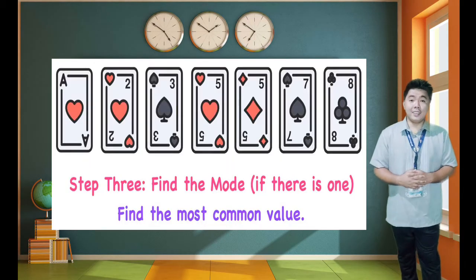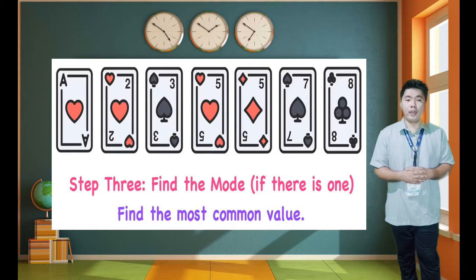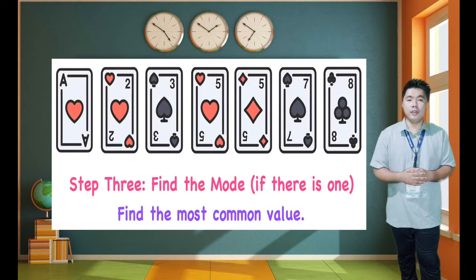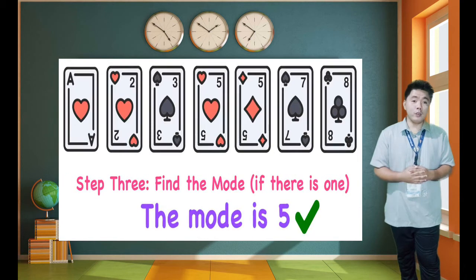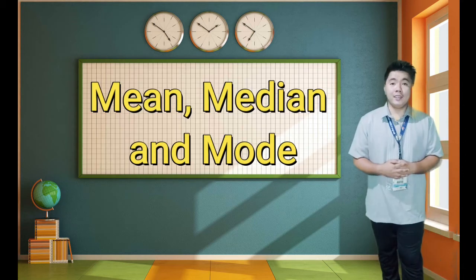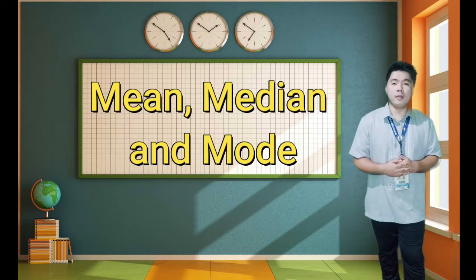Finally, let's move on to mode. The mode is the most frequently appearing number on the given cards. The mode of those cards is 5. That is our review on the measures of central tendency.